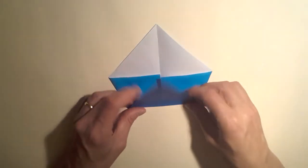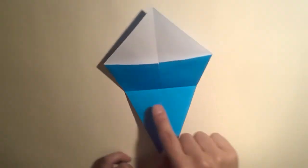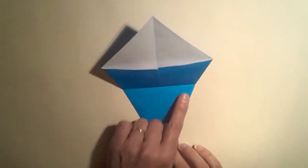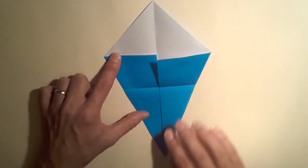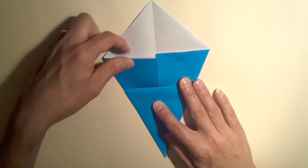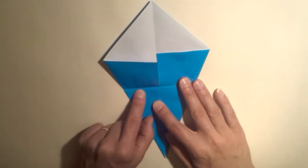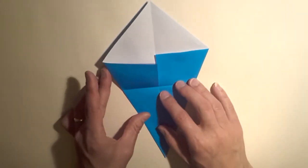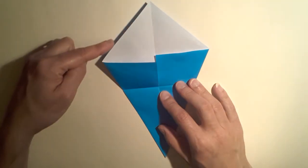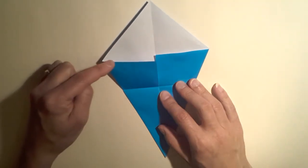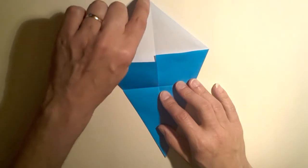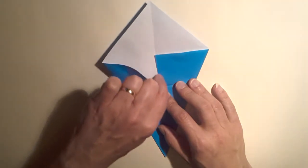We're now going to open up our model. Here you can see our valley crease. We're now going to valley fold along this crease. As we valley fold this edge here, this edge is going to align along our vertical crease.